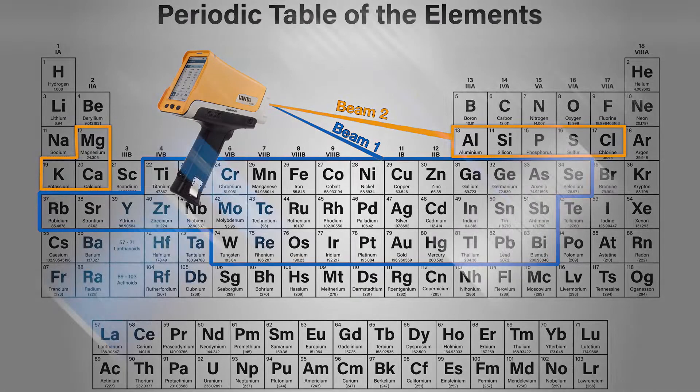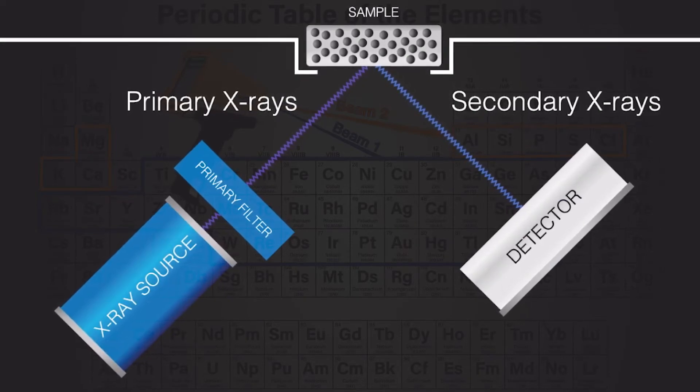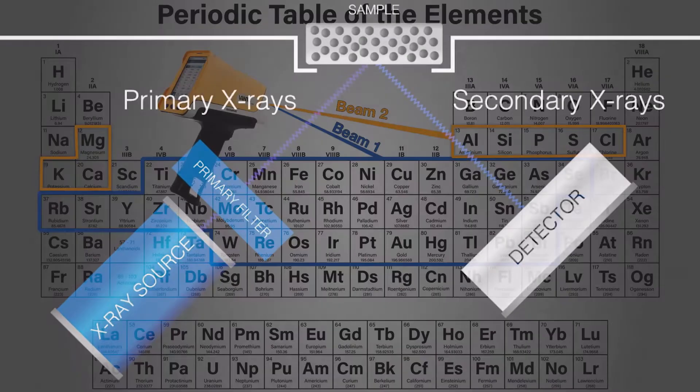and some filtration that we position in front of the X-ray. With these three things, we can optimise the analyser for different elements and our systems utilise options of one beam modes, two beam modes or three beam modes.